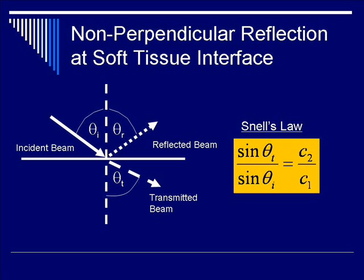Basically, the equation states that the sine of the transmitted angle, theta T, over the sine of the incident angle, theta I, equals C2 over C1, where C2 is the speed of sound in the transmitted medium, and C1 is the speed of sound in the initial medium in which the ultrasound beam approaches.